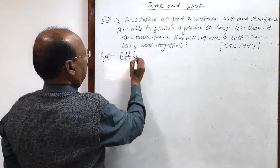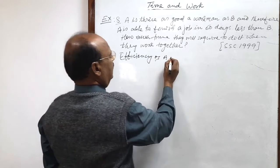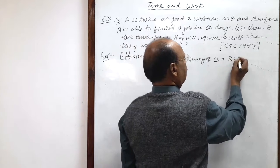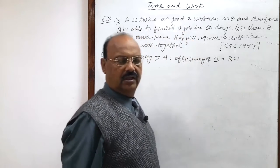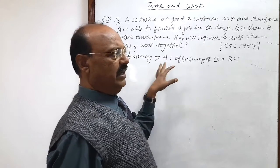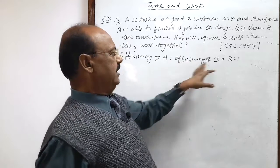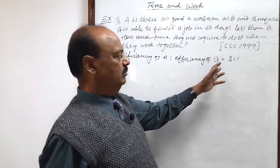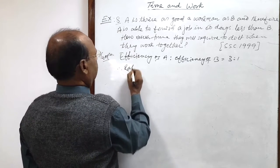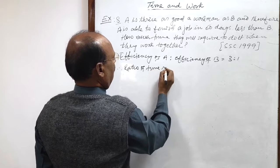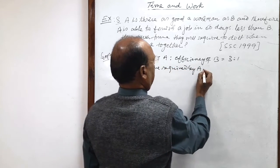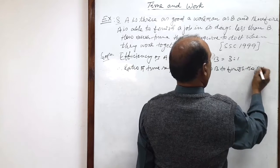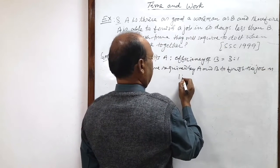Let us see the solution here. Given that efficiency of A to efficiency of B is three is to one. So time taken by them, the ratio of time taken by them will be one is to three. A is three times efficient than B, so time required by A will be one third that of B. Therefore, the ratio of time required by A and B to finish the job is one is to three.